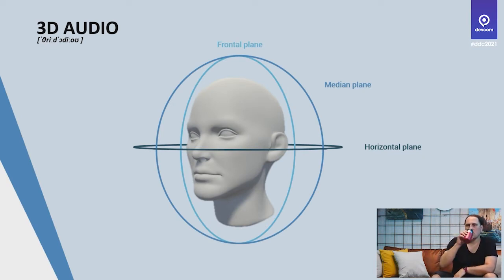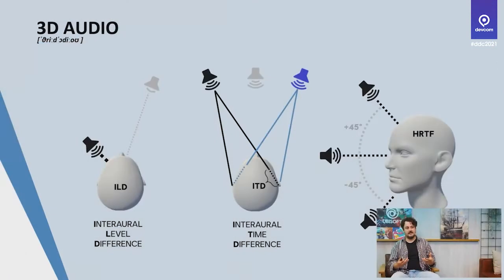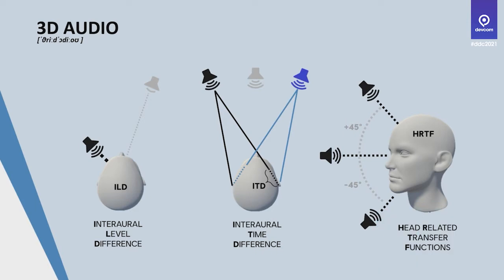Let me explain a bit. If we look at what the human being can actually perceive in terms of direction — where audio is coming from — we have three different layers: the frontal plane, the median plane, and the horizontal plane. There is interaural level difference, which means a sound closer to you is perceived as louder than one further away.